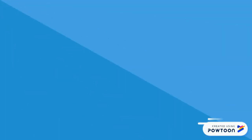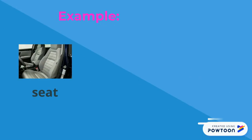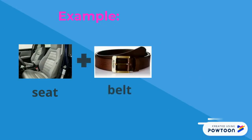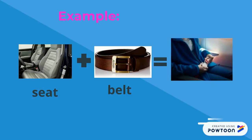Here is another example. We have a picture of a seat and we have a picture of a belt. When we put seat and belt together, what is our compound word? Awesome — seatbelt is our new compound word.